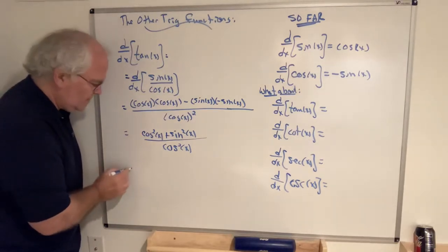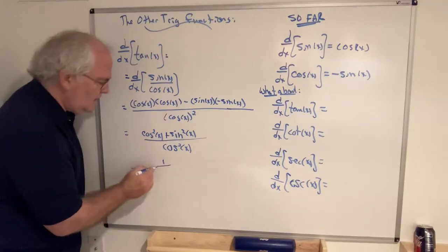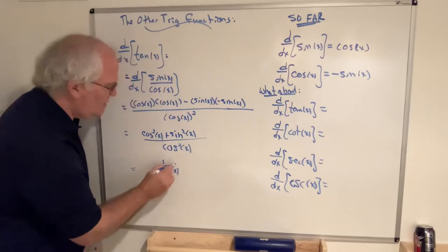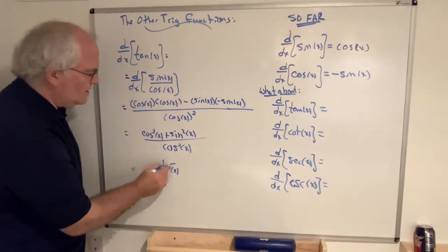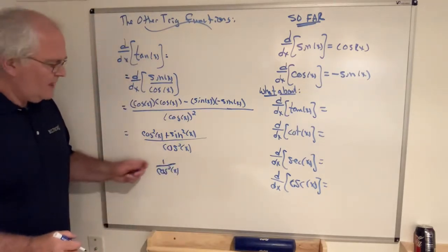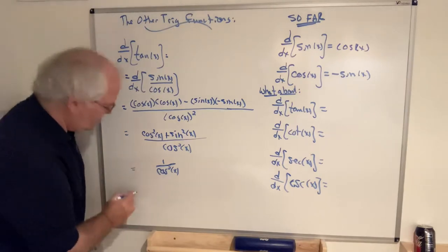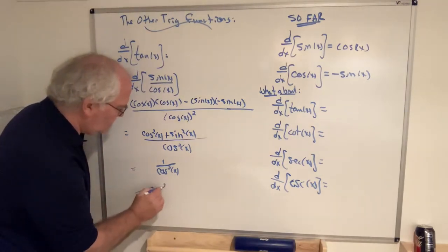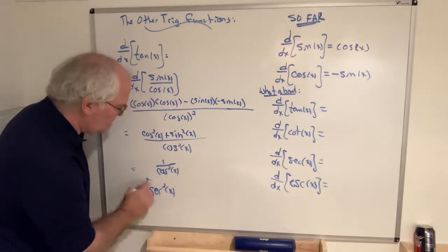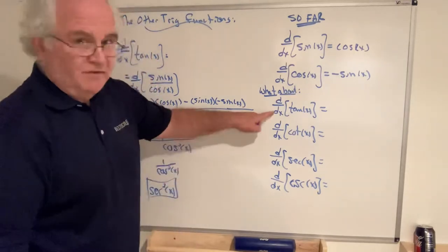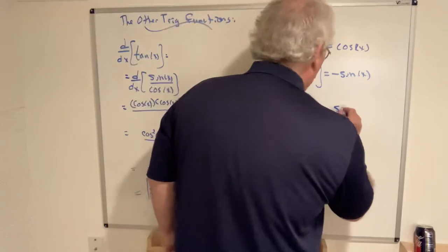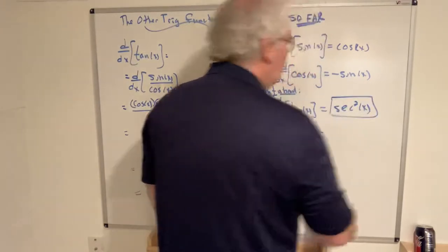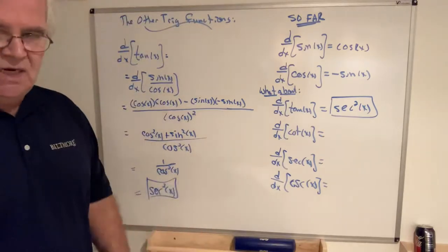Any trigonometry student worth their salt knows cosine squared plus sine squared — that's Pythagoras, that's one. So this becomes one over cosine squared. And one over cosine is secant, so one over cosine squared is secant squared. The derivative of tangent is secant squared.